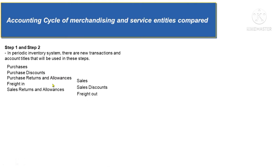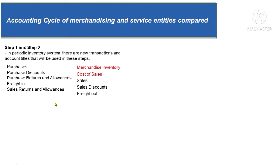In sales-related transactions, the new account titles not used by service entities are sales, sales discounts, sales returns and allowances, and freight out. But if the company is following the perpetual inventory system, you will use two unique account titles: the cost of sales account and the merchandise inventory account, which replaces purchases, purchase discounts, purchase returns and allowances, and freight in. You use these accounts in steps 1 and 2 of the accounting cycle if your company is a merchandising entity.